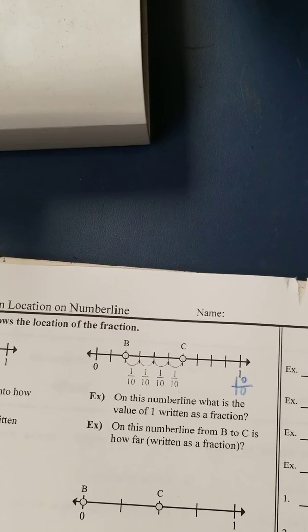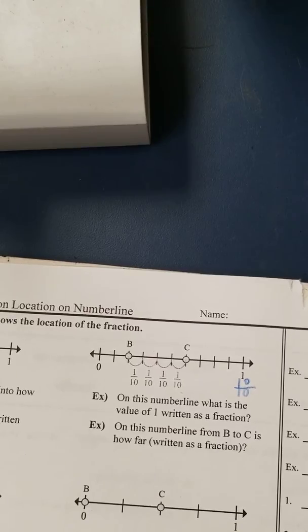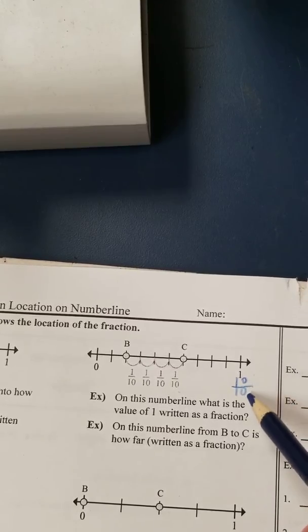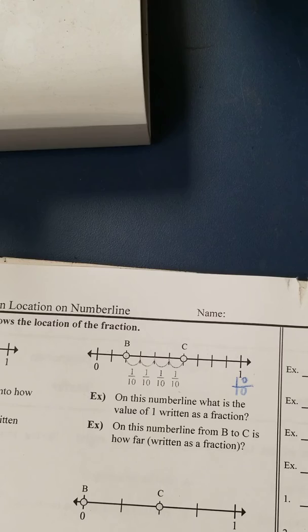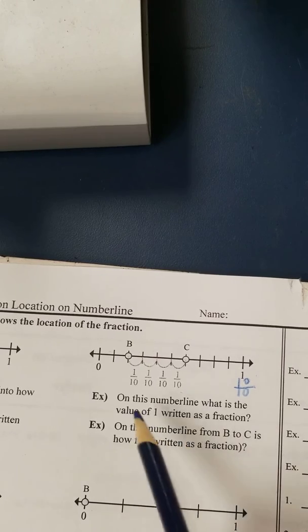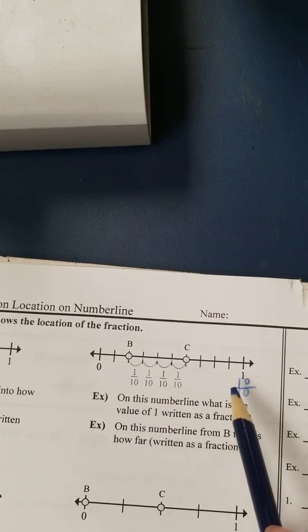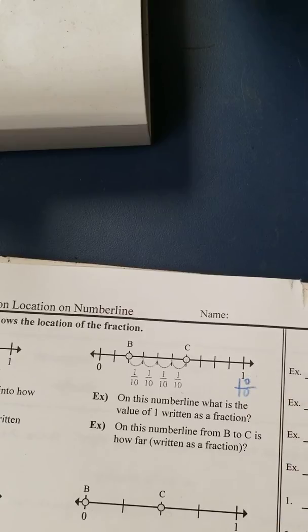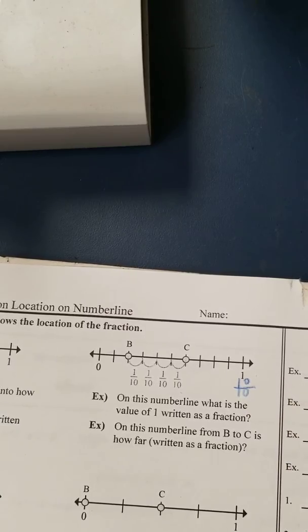We've talked a lot about the fact that when a fraction is equal to 1, the numerator and the denominator are always the same number. So we know what that number is going to be once we count the pieces. And then we can just put the same number on top. Or you can count over. Both work.